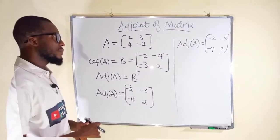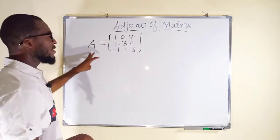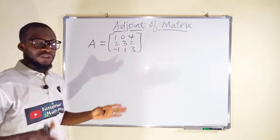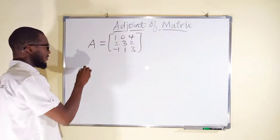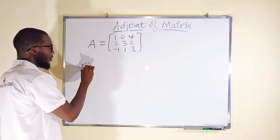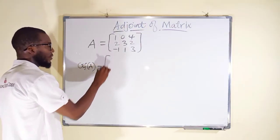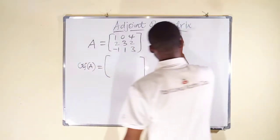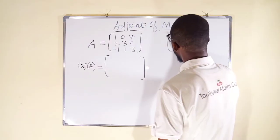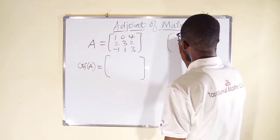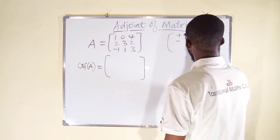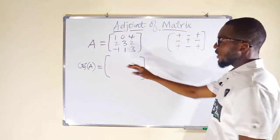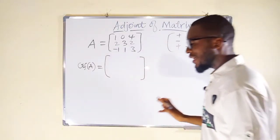Now let us take a 3x3 matrix and see how to find its adjoint. We have matrix A and we want to find its adjoint. First we need to find the cofactors of all entries. The sign pattern for a 3x3 matrix is: positive, negative, positive, negative, positive, negative, positive, negative, positive. Each entry we obtain is multiplied by its corresponding sign.